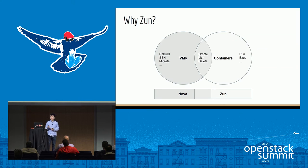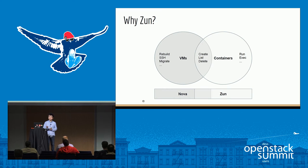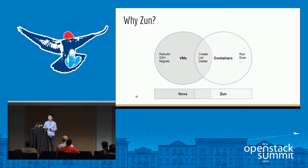Why did we create this new project? Right now in OpenStack there are container use cases that cannot be addressed. There is a solution called Nova Docker that allows users to use the Nova API to drive containers. But if Nova Docker exists, why create Zun? That is because the APIs for virtual machines and containers are different. There are shared operations such as create, list, and delete, but VMs and containers each have their own set of operations. Containers have operations like run and execute, and create parameters specific to containers. To explore container-specific features, we created a new API specifically for containers.